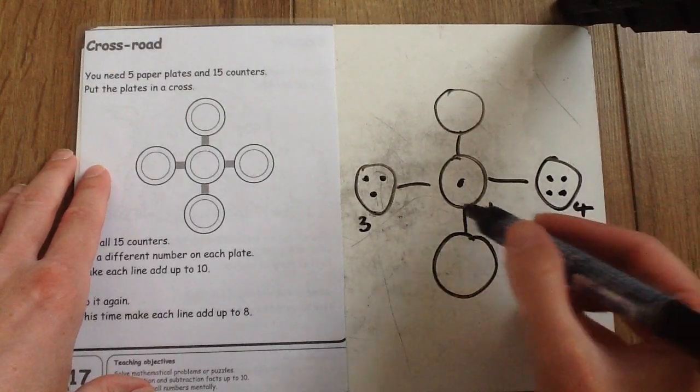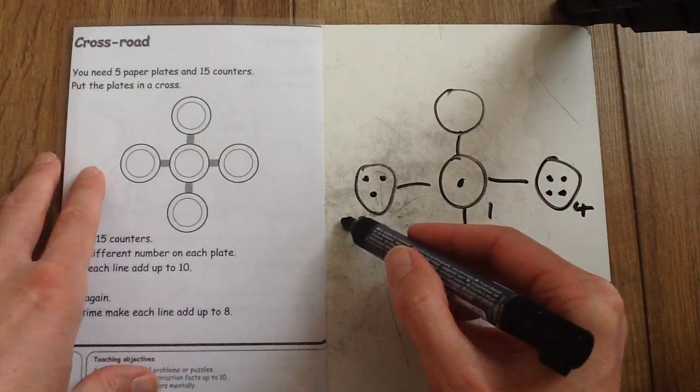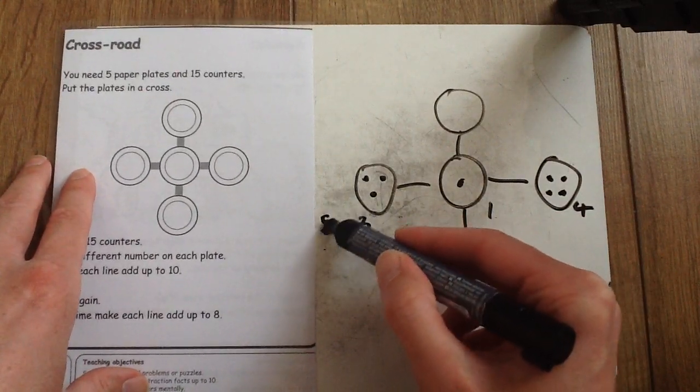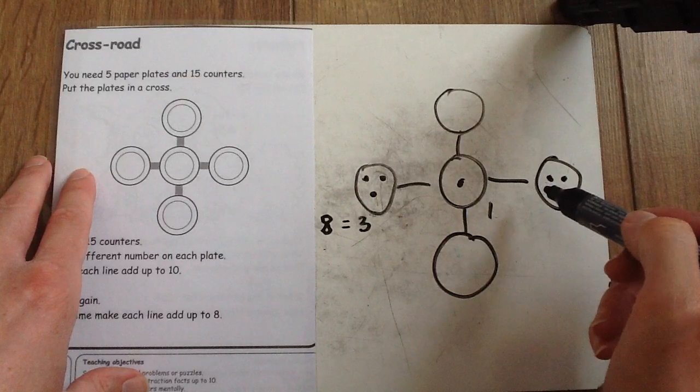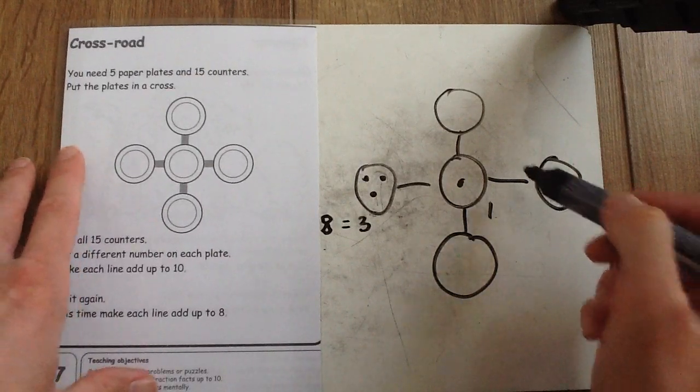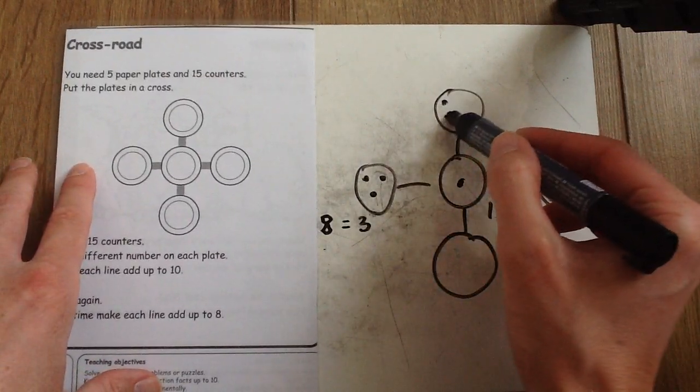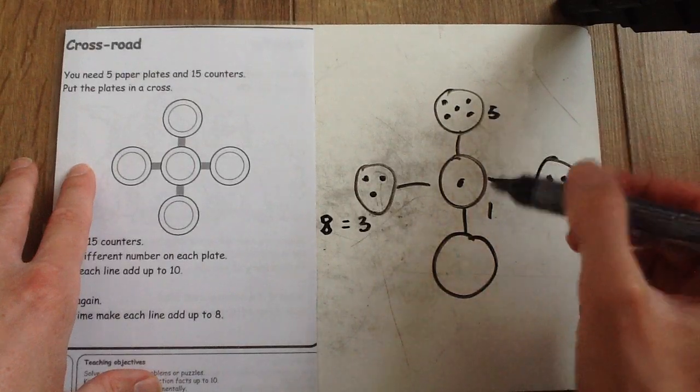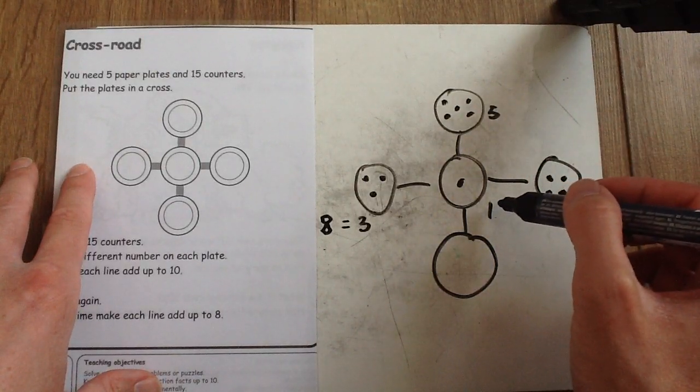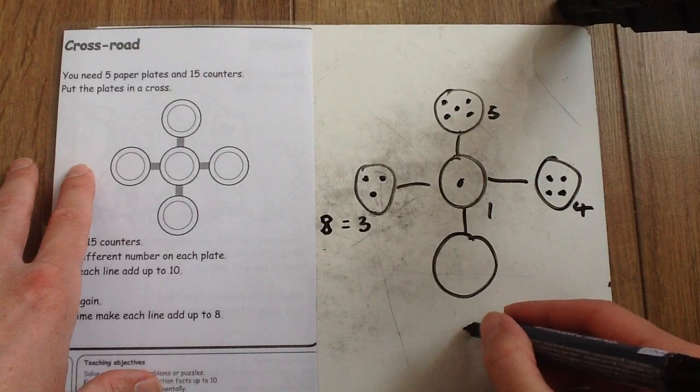So now 4 plus 1 plus 3 gives me a total of 8. So that row's working. Right, then I'm going to put 5 up at the top. Already got 1 in the middle. So to equal 8 at the bottom,